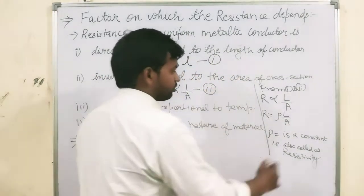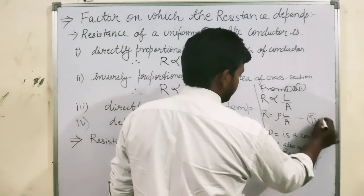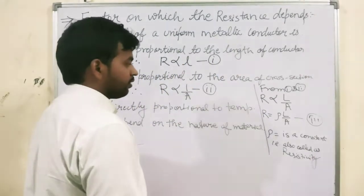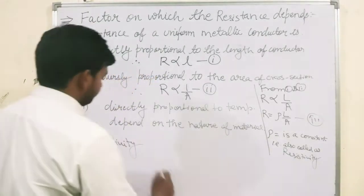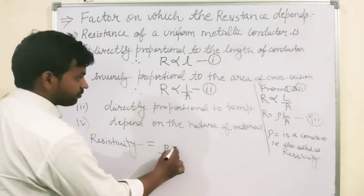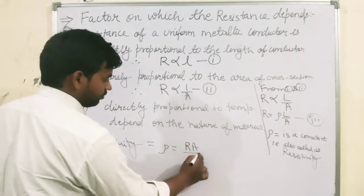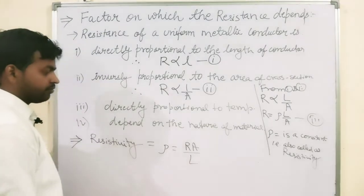So, from this equation, we get resistivity as R A upon L, clear? This is the formula of resistivity.